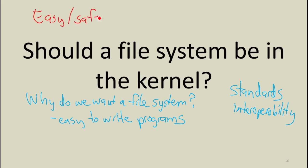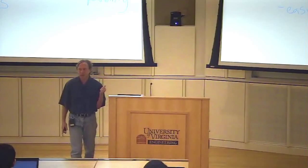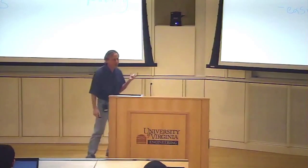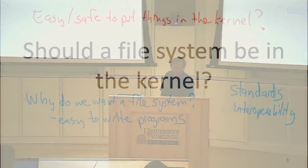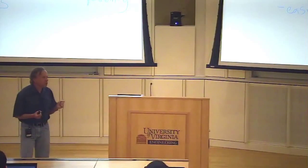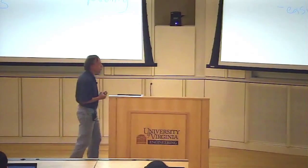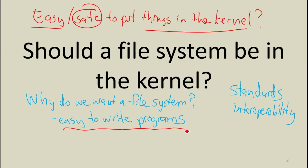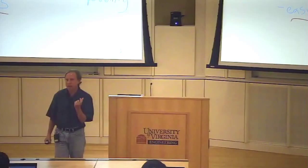Maybe we should put everything in the kernel. Many of you found problem set 4 pretty tough. If you had to implement that as a user-level abstraction, I think you would have found it a lot easier. You should be convinced that writing code that works in the kernel is much harder than writing code at user-level. You're giving up all these nice protections, and once you put something in the kernel, it can bash on anything in memory. So if something's going to be in the kernel, we better have a good reason. The reason we don't want a regular expression library in the kernel is because it works perfectly well as a user-level library.